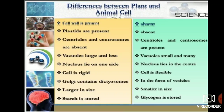One of the most important differences: in plant cells, cell wall is present, while in animal cells, cell wall is absent. Cell wall is basically made up of cellulose, and it is the outermost covering of the cell, which protects the cell and determines the shape of the cell.